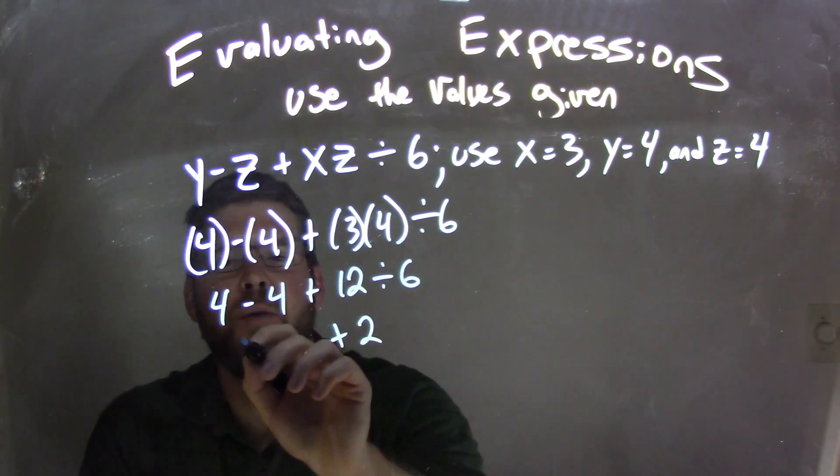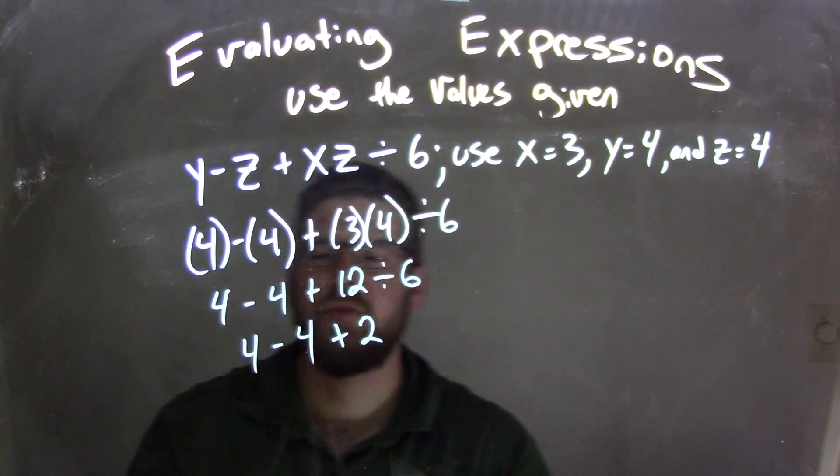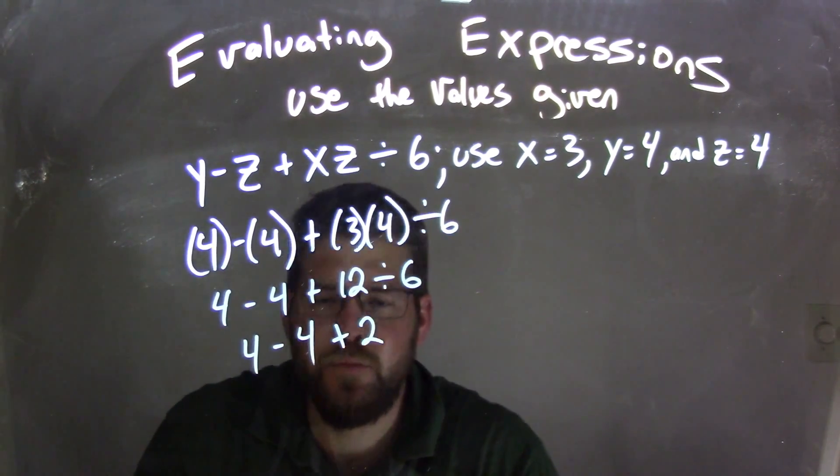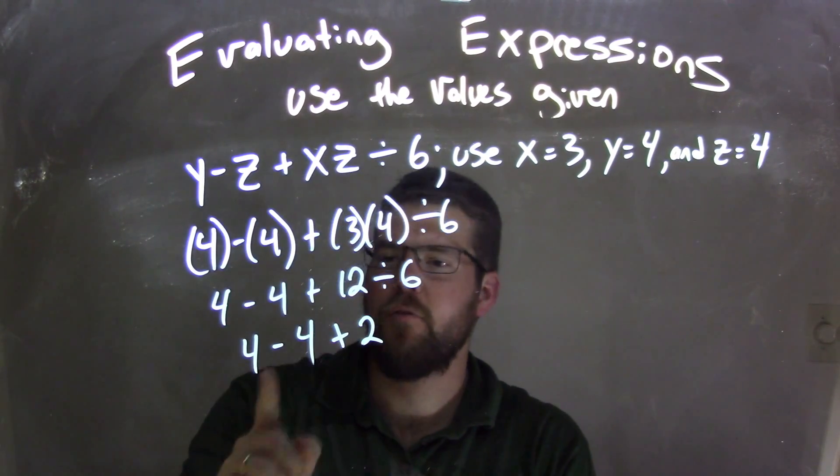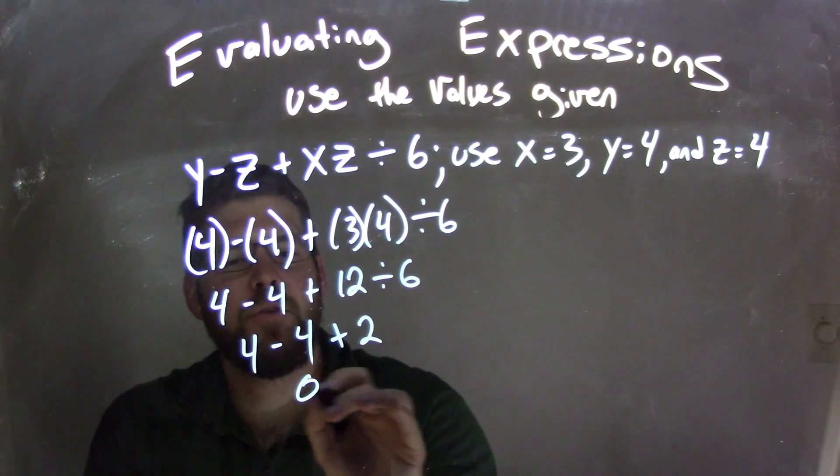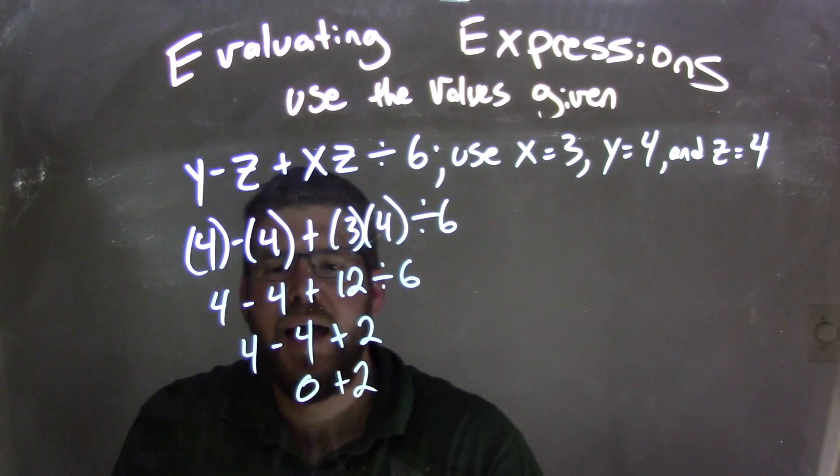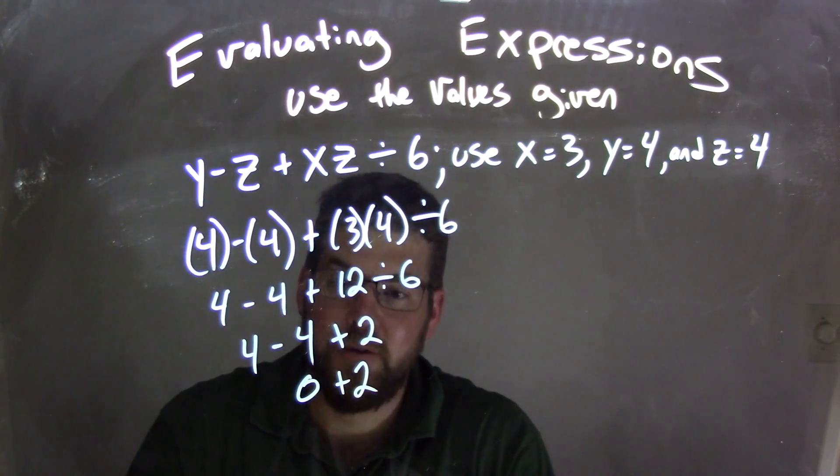Now I can take the 12 divided by 6, which comes out to be 2. So the 2 comes out here, and we have 4 minus 4. So now we have subtraction and addition, which are on the same level, and so we have 4 minus 4, which is 0 first, plus 2, and 0 plus 2 comes out to be 2.